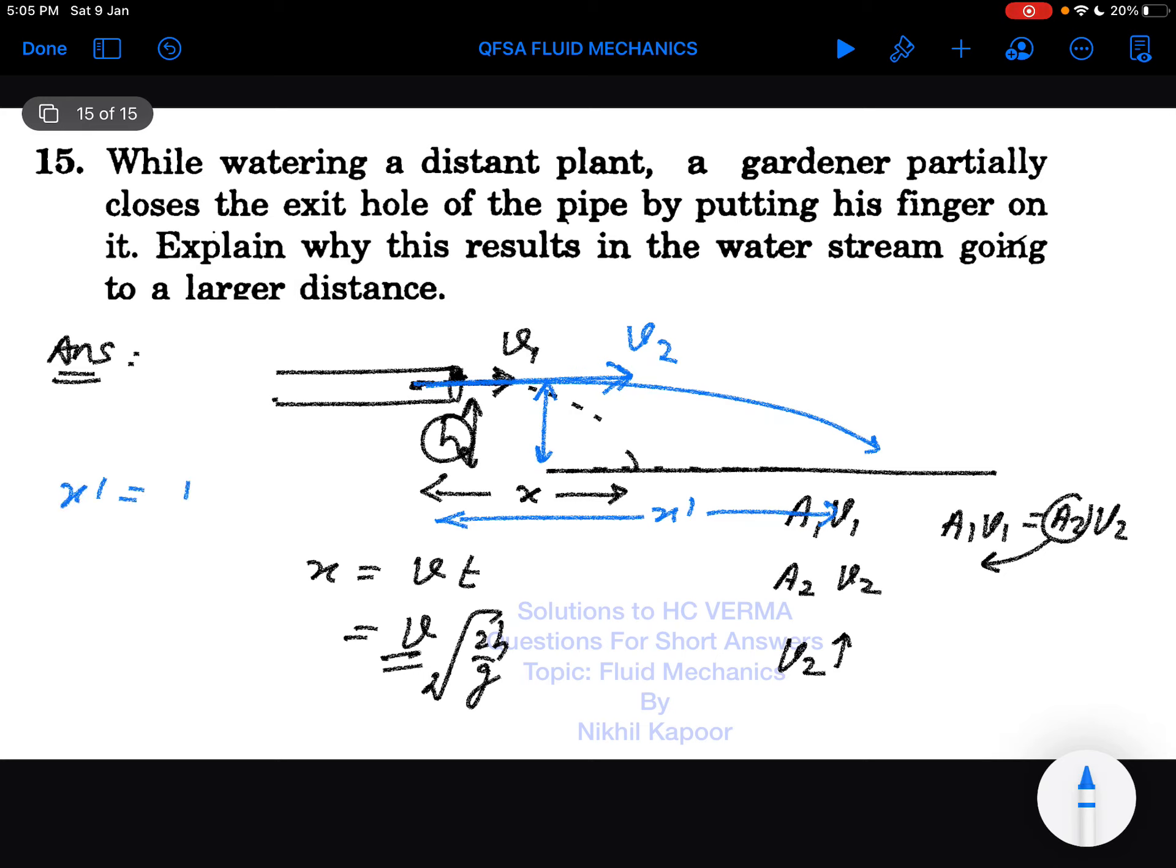The horizontal distance will be equal to speed into time, but the speed is now v2, and the time is still √(2h/g). Hence, the water stream goes to a greater distance by just partially closing the opening. This is because of the continuity equation. Thank you.